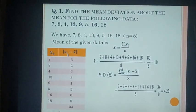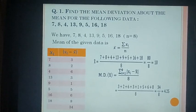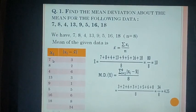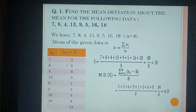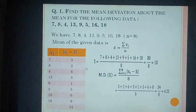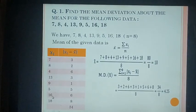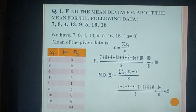In the next step we find |xi − x̄|. Subtracting x̄ from each xi: 7 − 10 = −3, but since we take the modulus, it is 3. Similarly: |8 − 10| = 2, |4 − 10| = 6, |13 − 10| = 3, |9 − 10| = 1, |5 − 10| = 5, |16 − 10| = 6, |18 − 10| = 8.